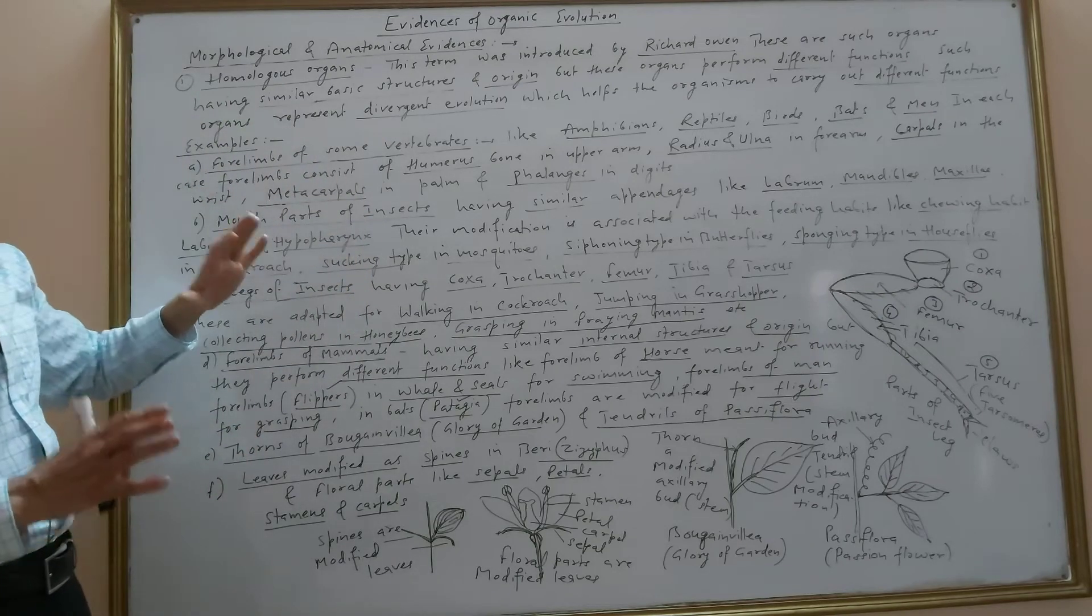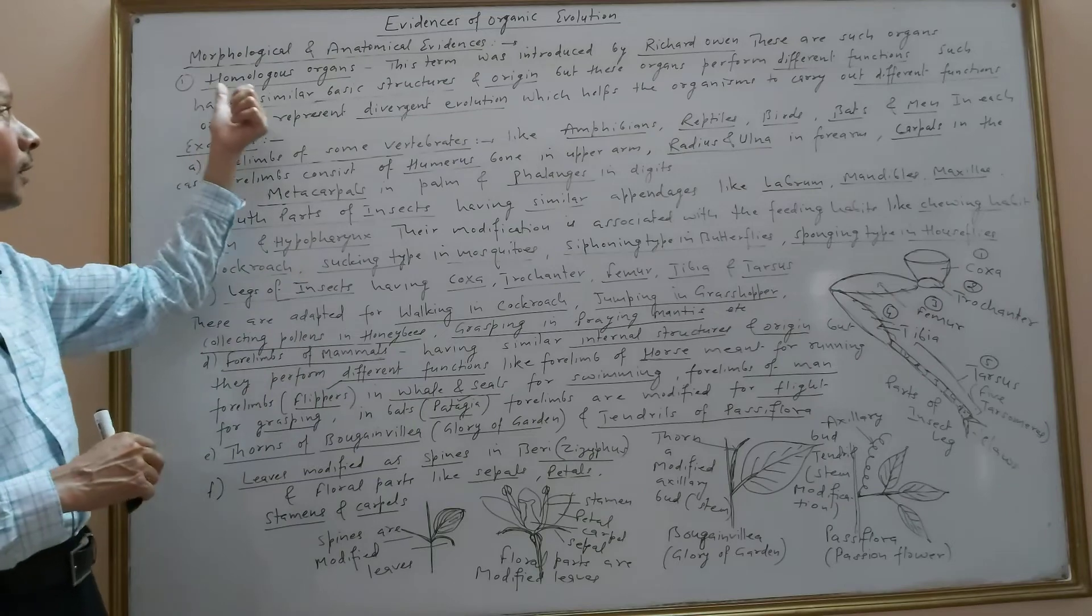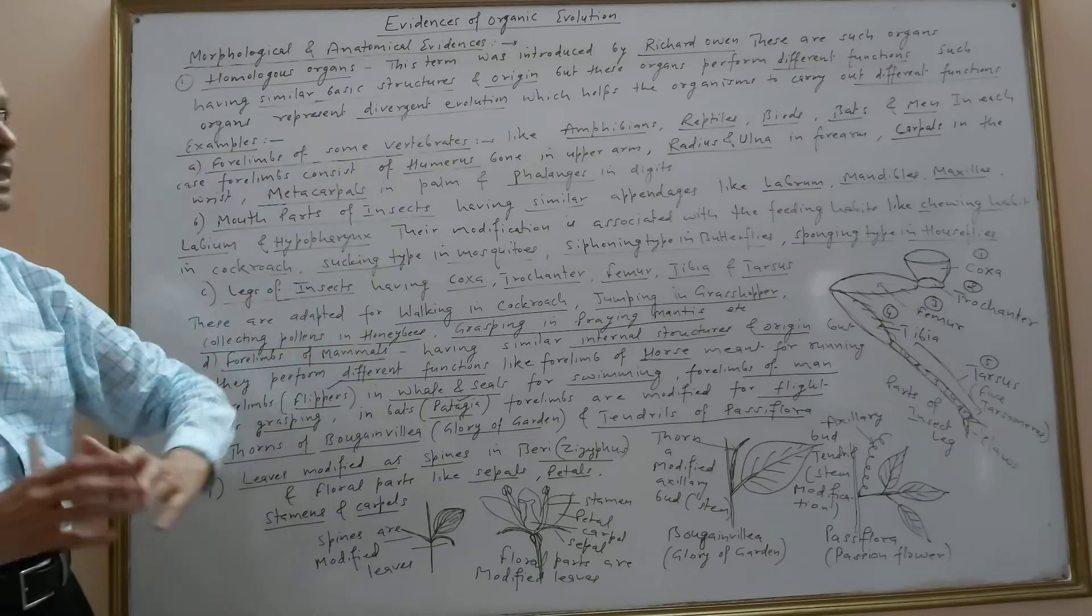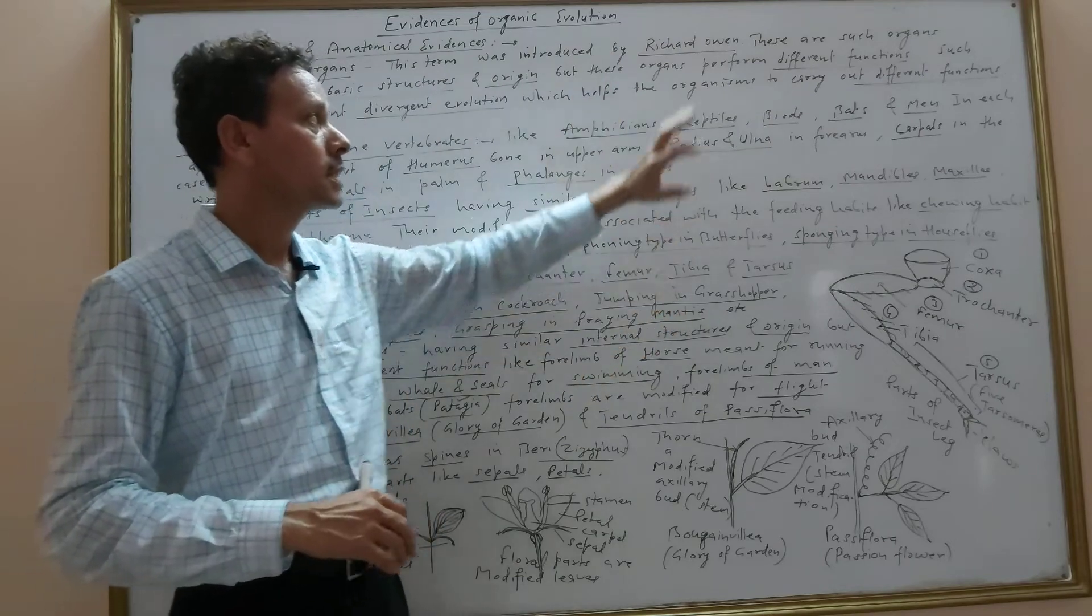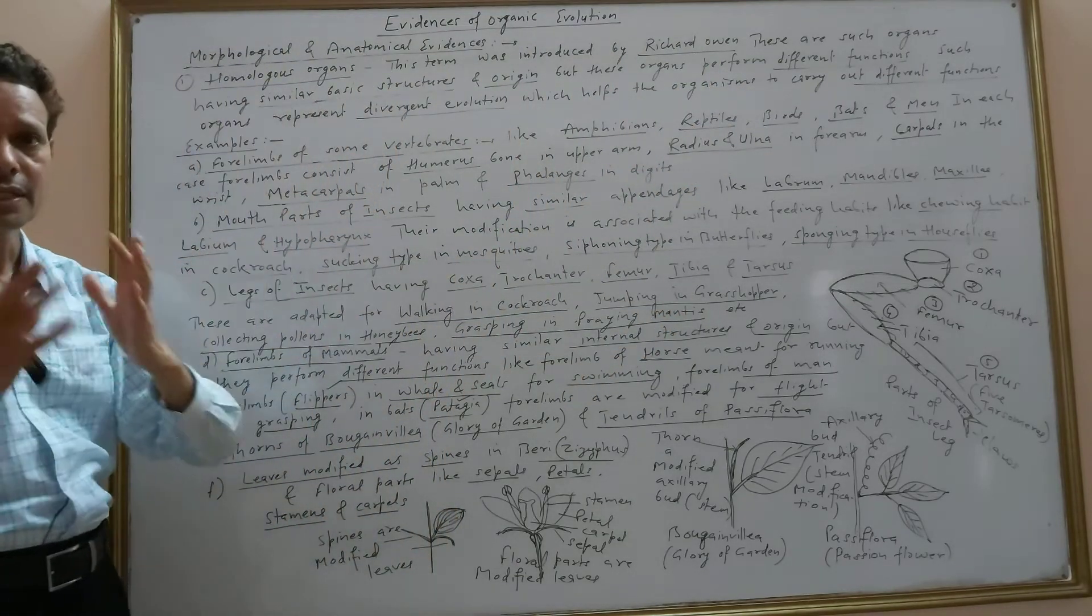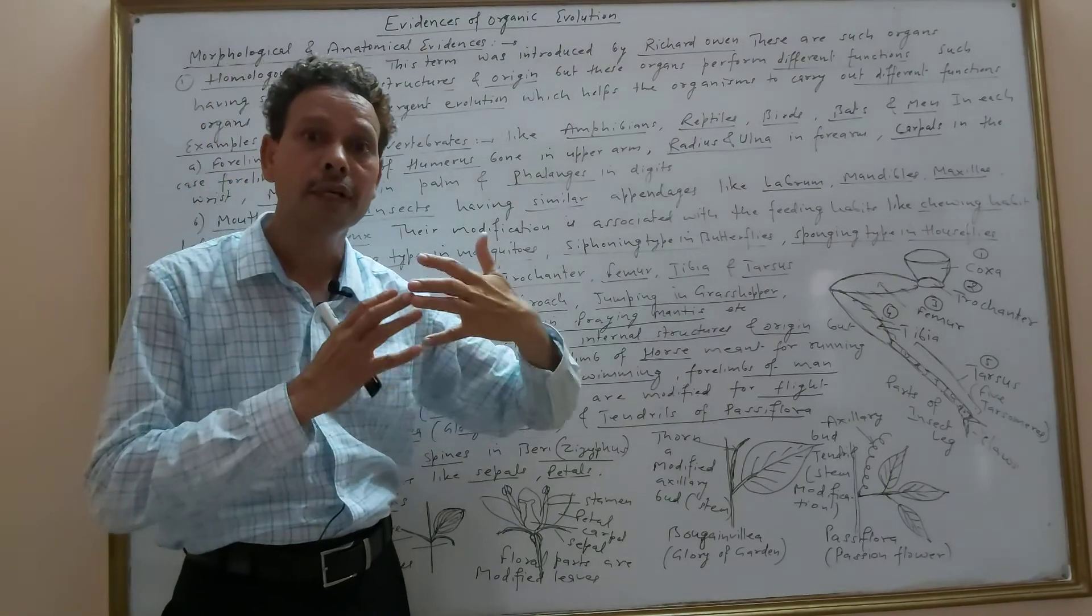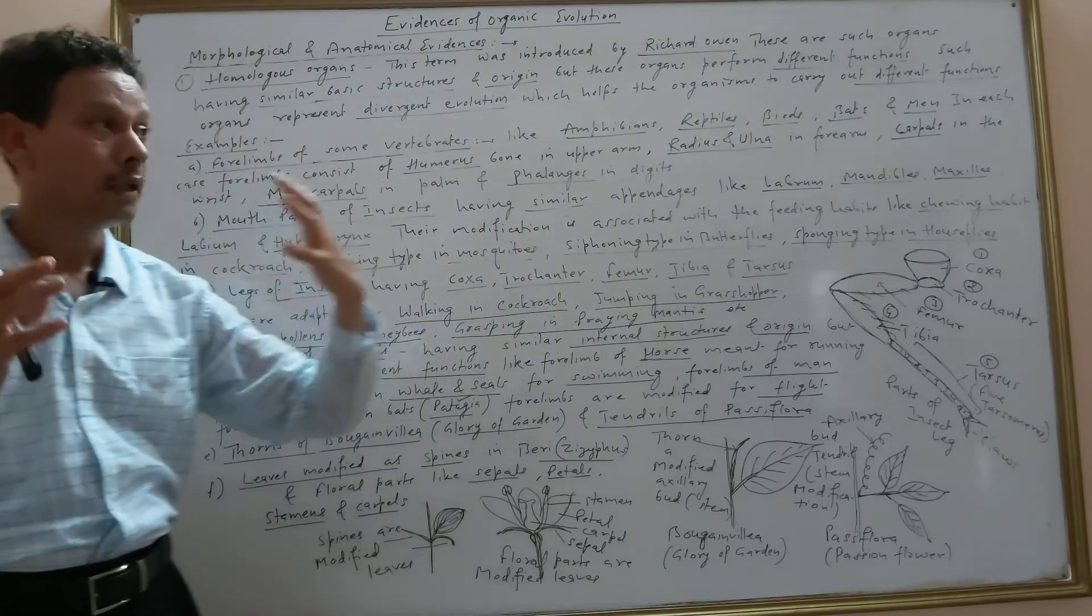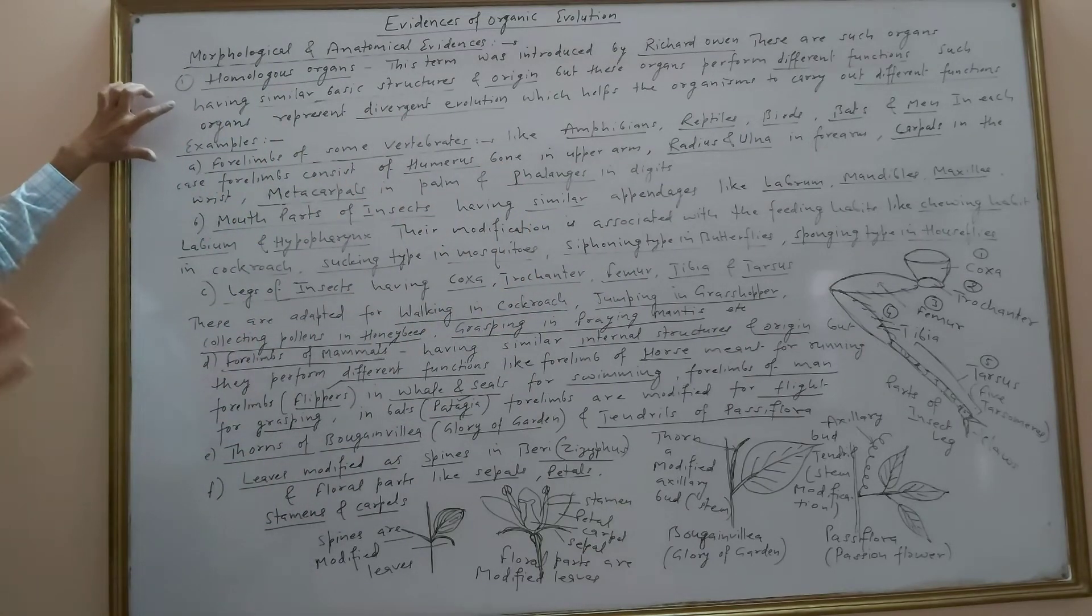We will discuss morphological and anatomical evidences, the topic of homologous organs. This term was introduced by Richard Owen. Homologous organs have similar basic structures and similar origin, but these organs have different physiological activities.